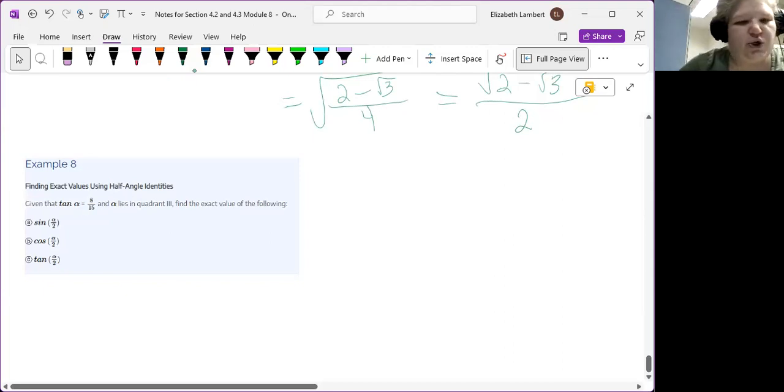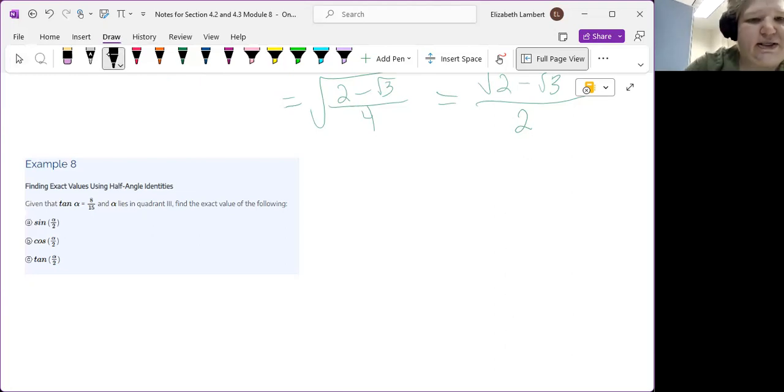And then this last one. We are told that α lies in quadrant 3. So let's start with that. So there's our α somewhere in there. And then the tangent of α is 8 for the opposite side, 15 for the adjacent side. Now because this is in quadrant 3, the tangent is positive. But it is positive because both of these sides are negative.